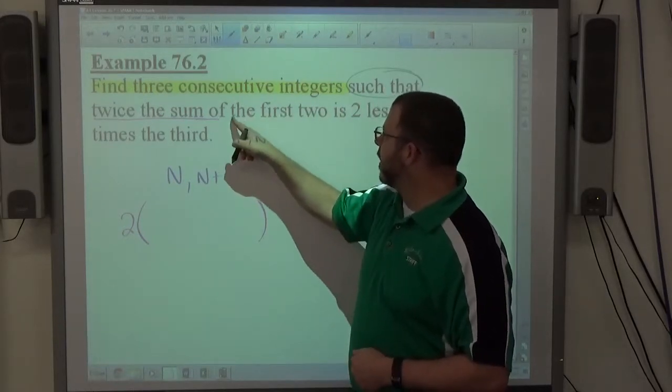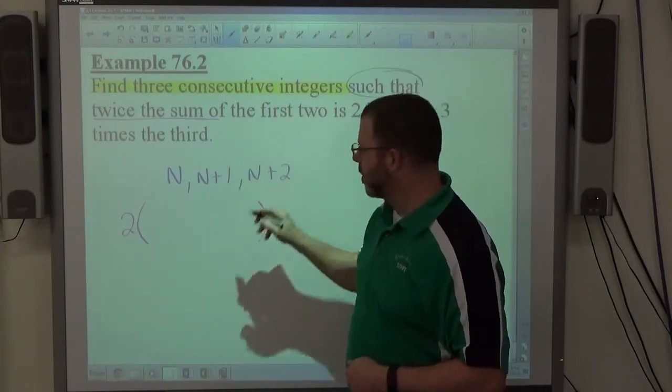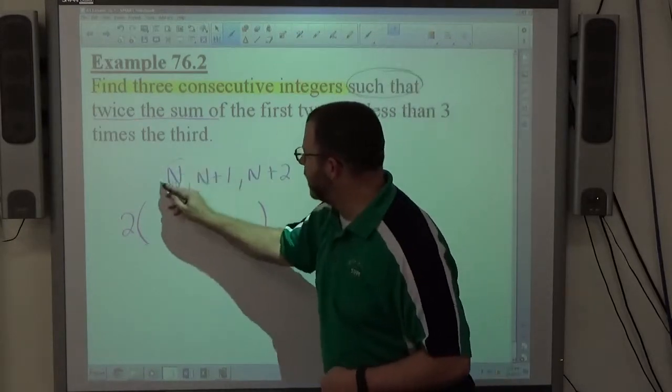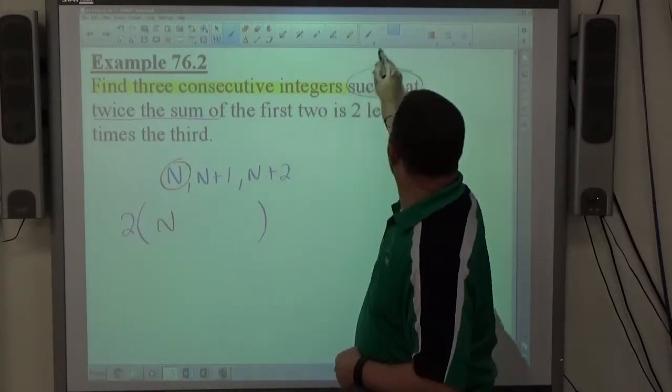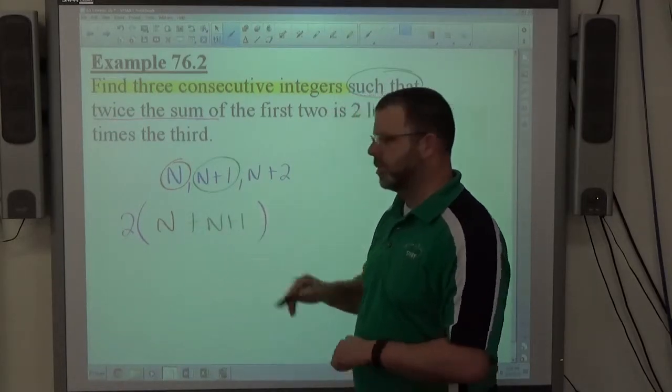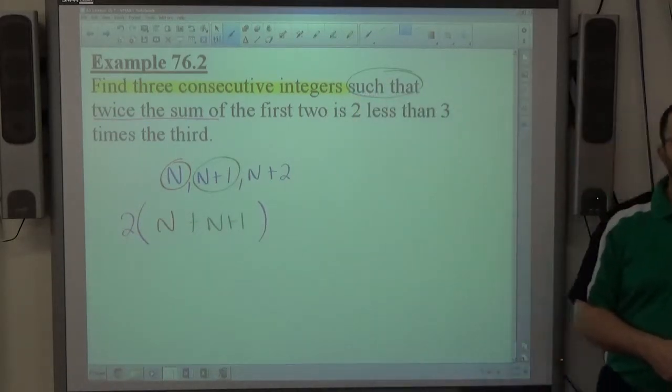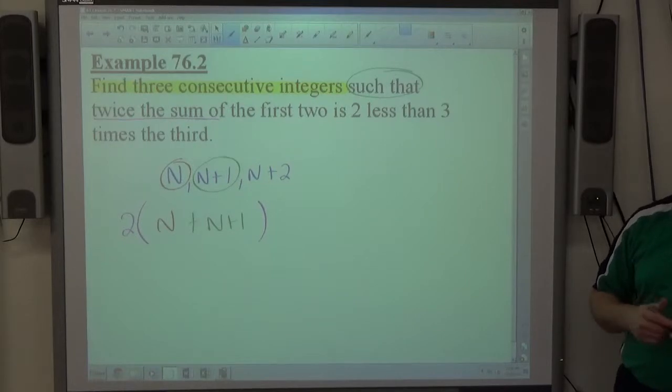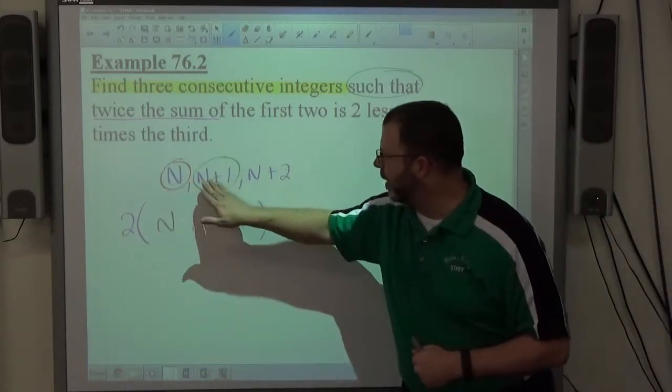This is the same way of saying the first and second, right? So the first n added to the second n plus 1. Okay, so there's an implied and there. So the sum of the first two, the first one plus the second one.